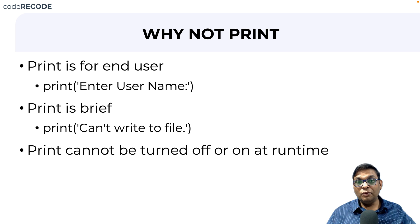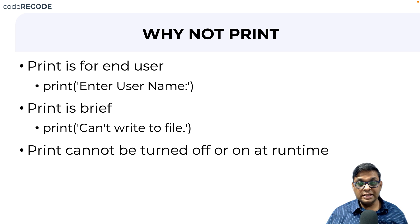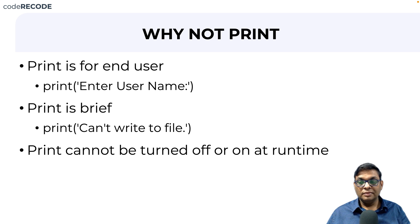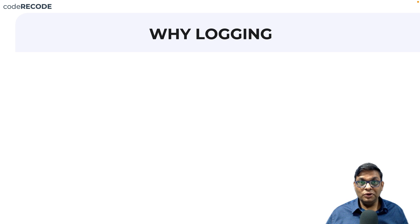You cannot turn off or control print statements at runtime. Once you've written code with print statements, every time you run that code those statements will be printed to the console — you have no control over it. Also, you cannot easily send that output to a file. That's why we have the very useful concept called logging.